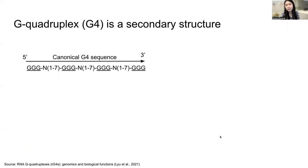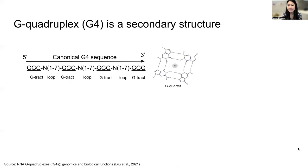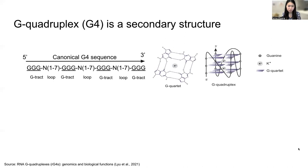First things first, a G-quadruplex, or G4, is a secondary structure that exists in both DNA and RNA. In this project, we'll be focusing on RNA G4, or RG4. The standard or canonical G4 sequence has a repeat of consecutive Gs followed by a sequence of any nucleotide of length 1 to 7. A G4 sequence forms a four-stranded planar quadruplex structure called a G-quartet, and when two or more G-quartets stack on top of each other, they form a G4.